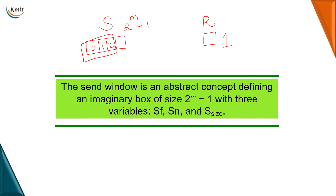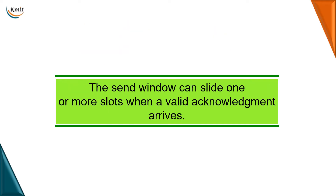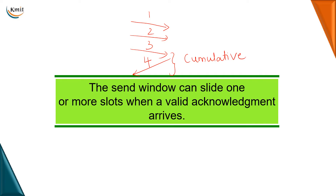As the name says, the window slides. Whenever we send a frame — say frame 0 — the window slides and points to frame 1, then slides again to frame 2. The send window can slide one or more slots when a valid acknowledgement arrives, meaning the sender can send multiple frames before an acknowledgement arrives. This acknowledgement is called a cumulative acknowledgement because multiple frames have been successfully received.